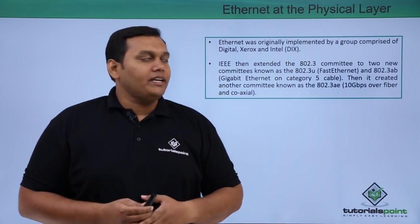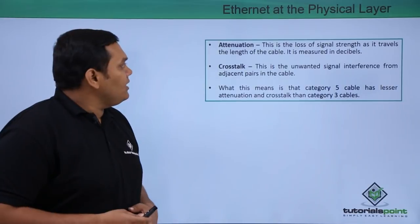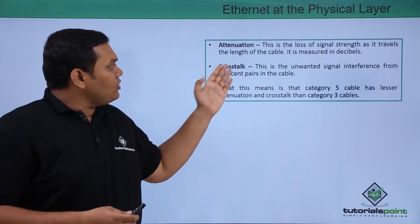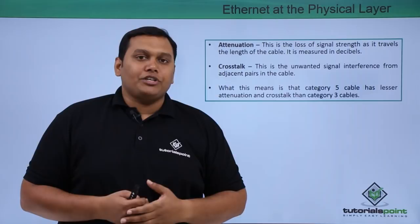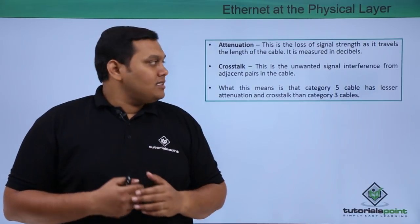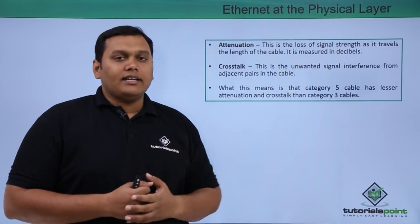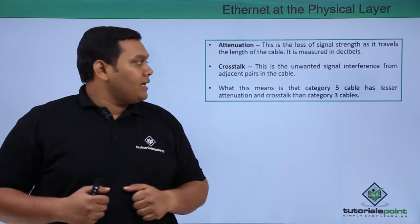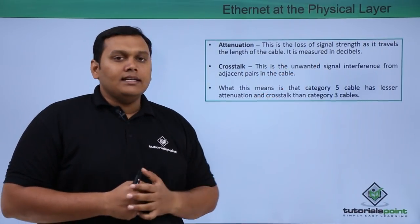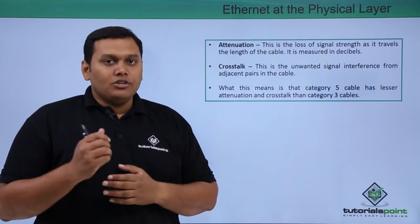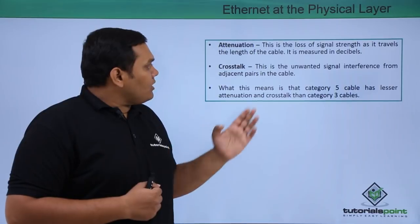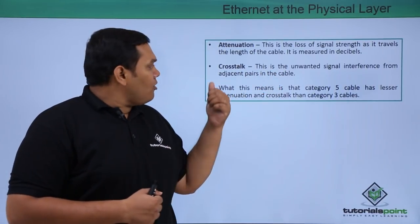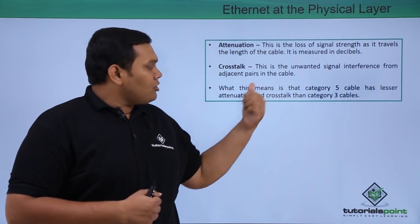Ethernet at the physical layer is based on attenuation and crosstalk. Attenuation is the loss of signal strength as it travels through the length of the cable, measured in decibels. Crosstalk is the unwanted signal interference from adjacent pairs within the cable.